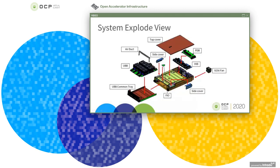In the system exploded view, OAMs are screwed onto the UBB, which is screwed onto the UBB common tray, and the UBB common tray is placed into the chassis. The HIB and PDB can be installed from the rear top side, and the side cover is designed for PCIe add-in card installation. The top cover, side cover, fan, PDB, and UBB common tray are all tool-less design.